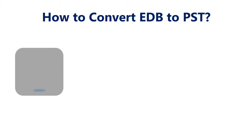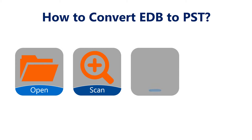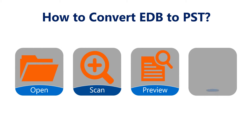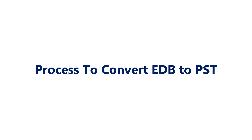The tool works in 4 steps. Firstly, open and browse your EDB file. Then scan it for recovery if corrupt. Then preview the content of your EDB file. Finally, export the EDB into PST format. Let's begin in detail.